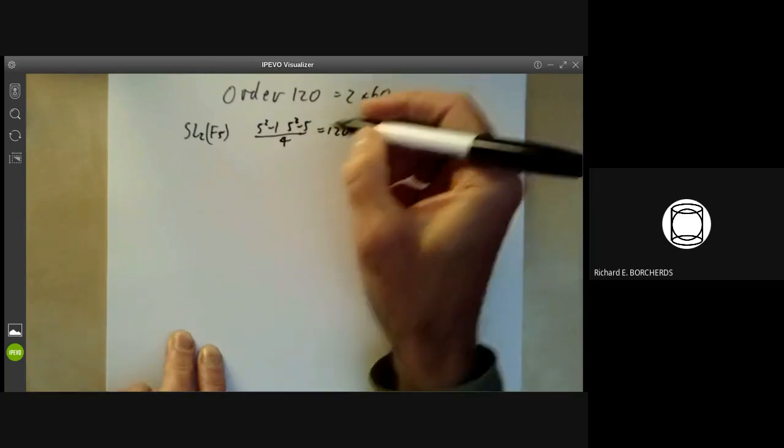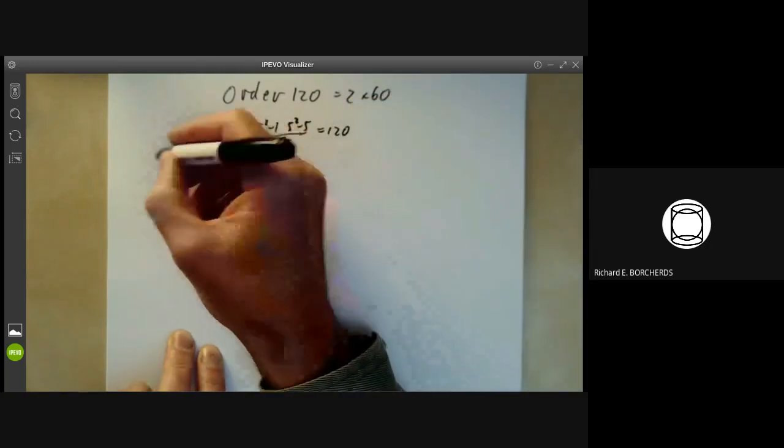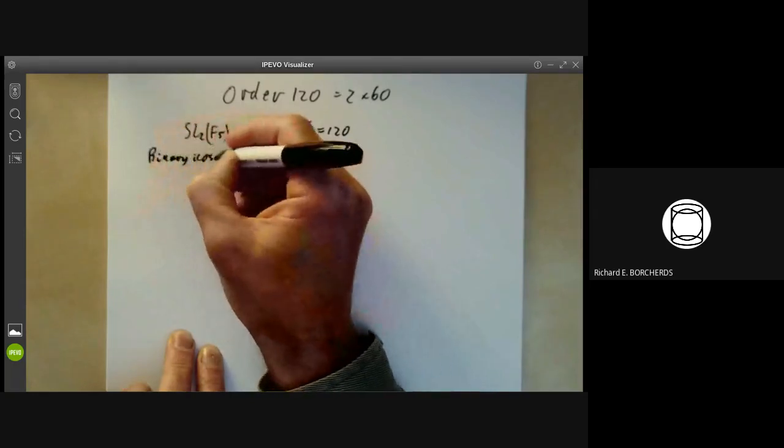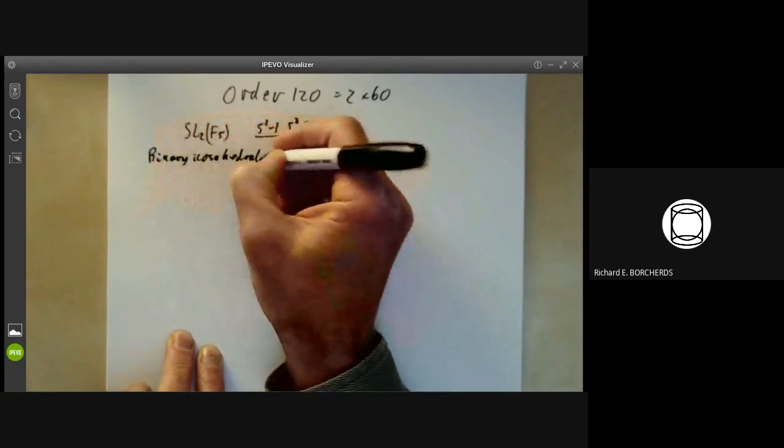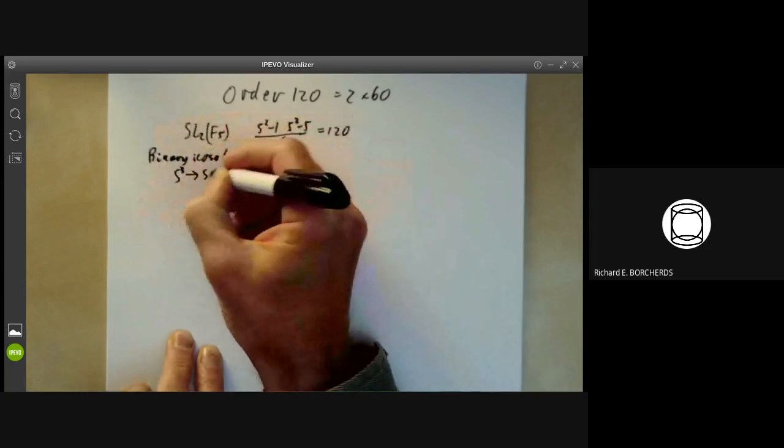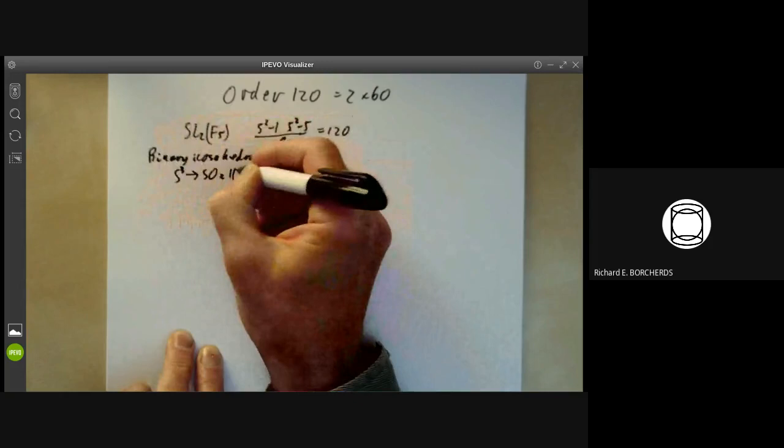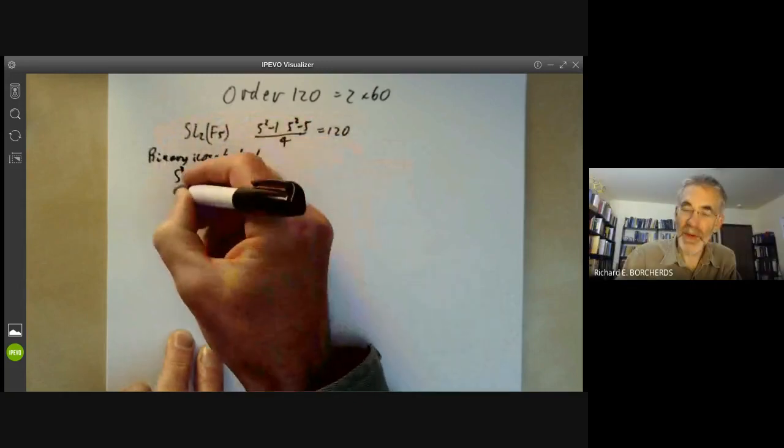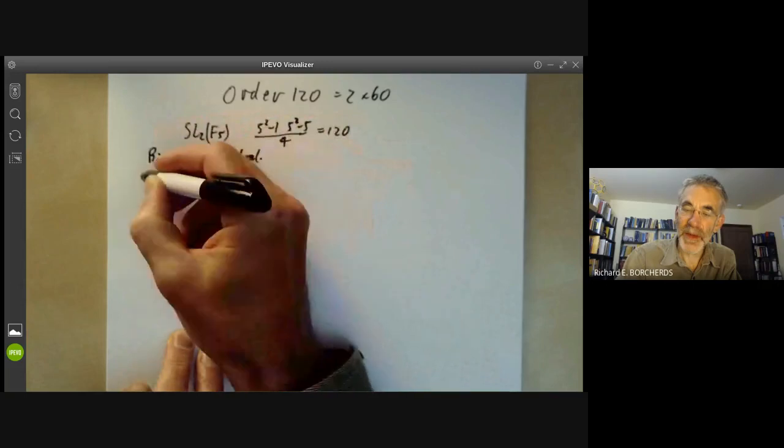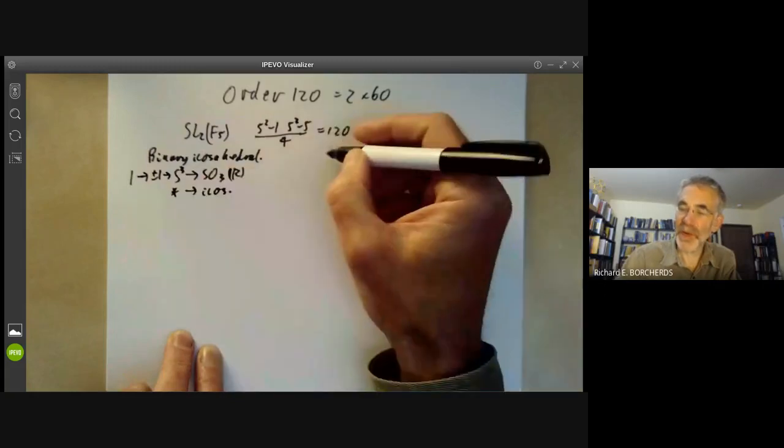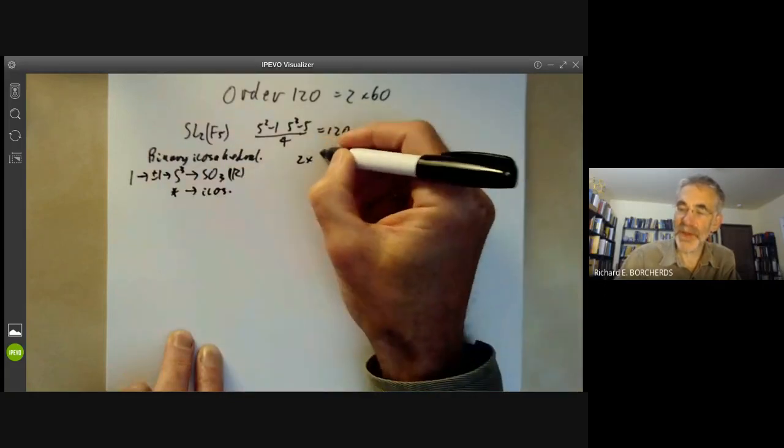Or we can take the binary icosahedral group. So you recall that we take the map from the unit quaternions to SO3 of the reals and we take the icosahedral group here and take its inverse image here and because this is a double cover, this is twice the order of the icosahedral group which is 2 times 60 which is 120.